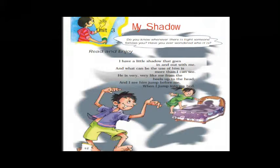The very first stanza: 'I have a little shadow that goes in and out with me, and what can be the use of him is more than I can see.' In this first stanza, the poet says he has a reflection — the shadow — that follows him wherever he goes. The poet is not able to understand the use of the shadow except that it follows him everywhere.